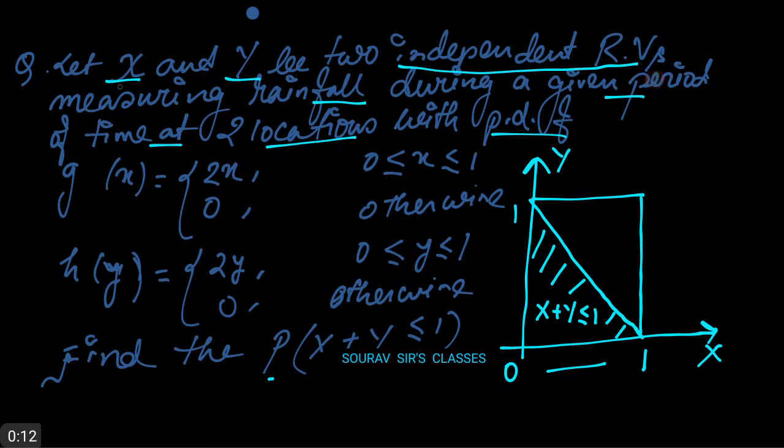The problem is: let X and Y be two independent random variables. Let's start solving the problem. Here the joint pdf of X and Y is given as f(x,y)...